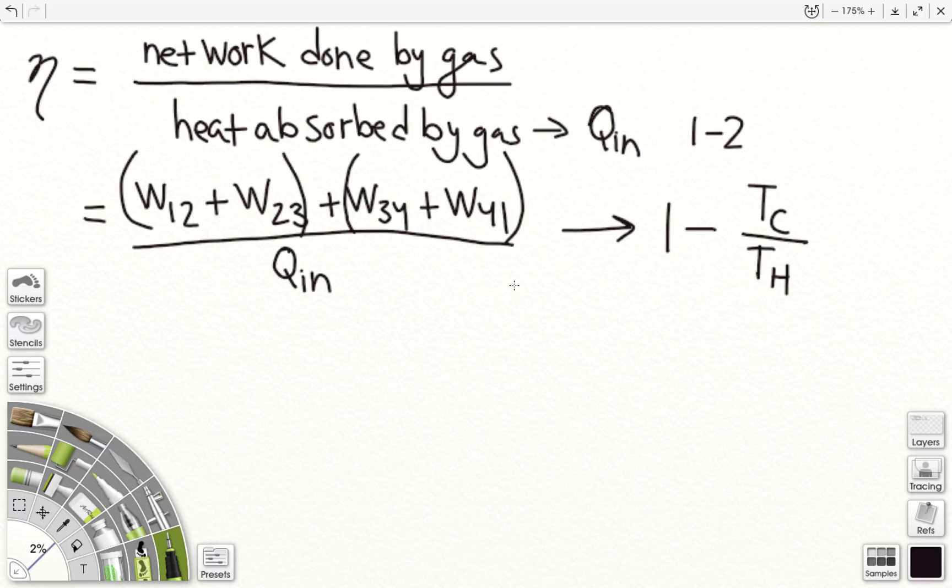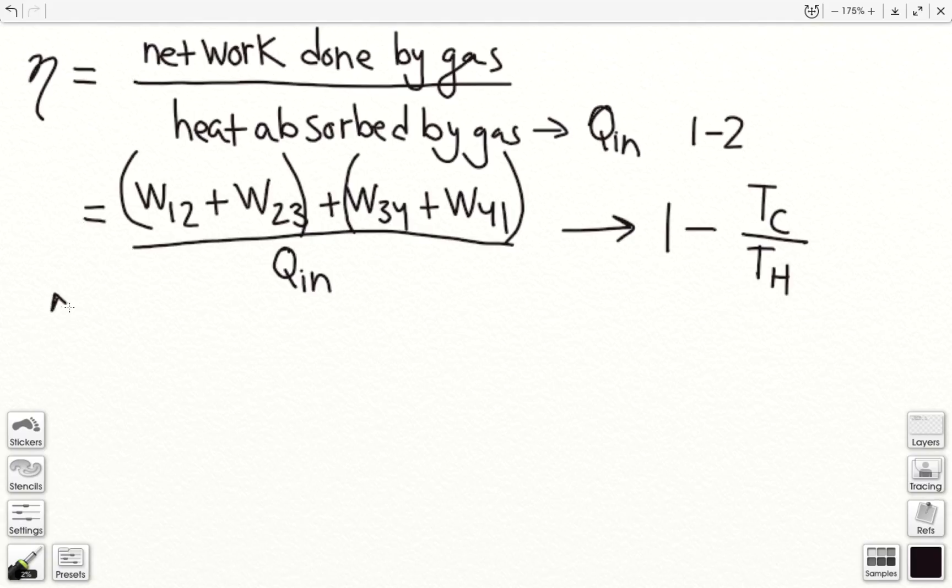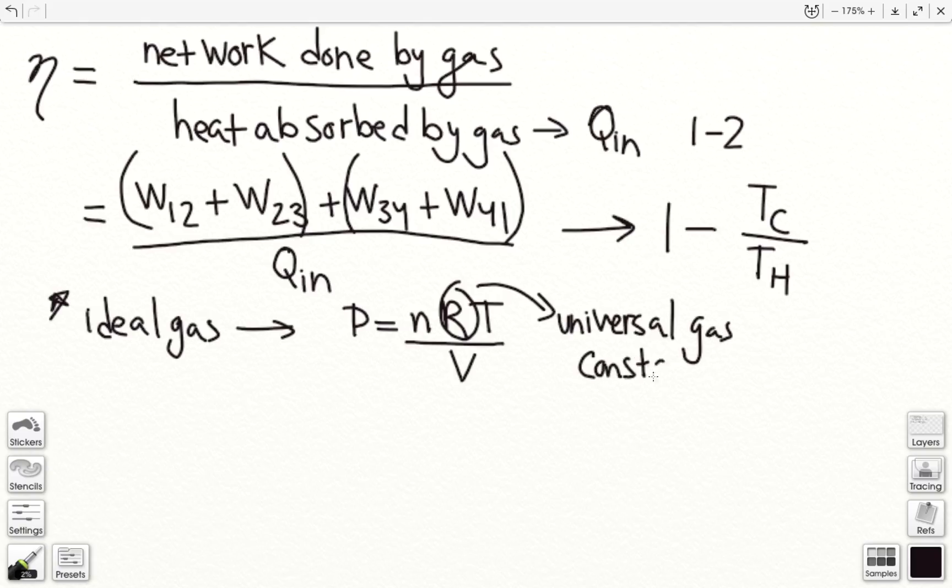Okay, another thing to note, so in this derivation, one of the assumptions I'm going to make is that we are working with an ideal gas. That means that it follows the rule that pressure of a gas is equal to nRT, T temperature of the gas, over volume, where R here is just some universal gas constant, and n is the number of particles in gas.